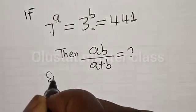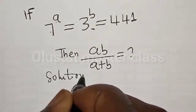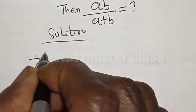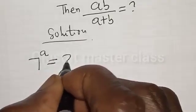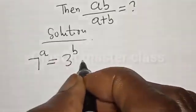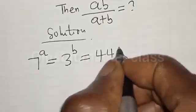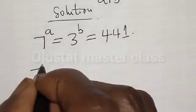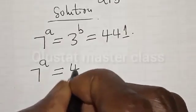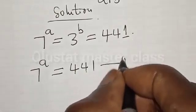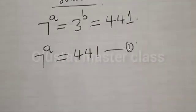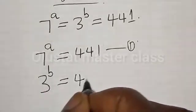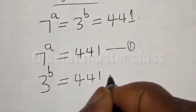Solution. We have the given equation: 7 raised to power A is equal to 3 raised to power B is equal to 441. Then we have 7 raised to power A is equal to 441 — let's call this equation 1. Also, 3 raised to power B is equal to 441 — let's call this equation 2.